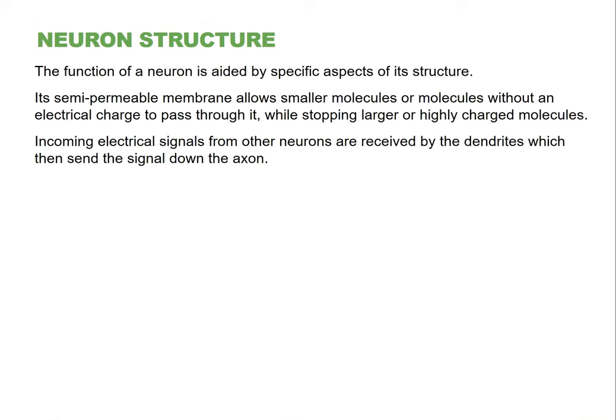The first thing to talk about is the structure of a neuron. A neuron is just a nerve cell. It's similar to most other cells you might learn about in a biology class, but there are specific structural features of the neuron that make it a little bit different.